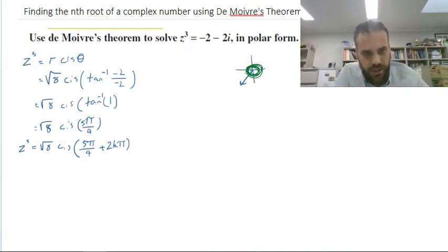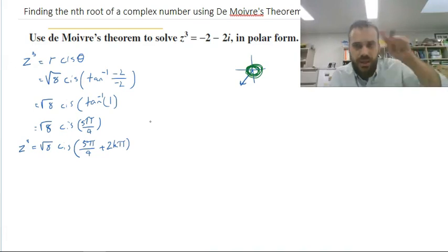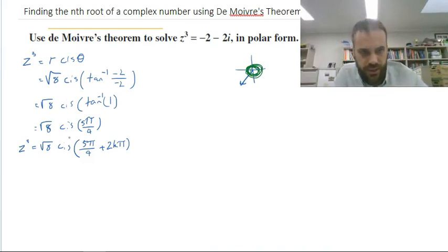So that means that it's going to be root 8, cis, 5 pi on 4, plus 2 times 0 times pi. Or it could also be root 8, cis, 5 pi on 4, plus 2 times 1 times pi. Or root 8, cis, 5 pi on 4, plus 2 times 2 pi. So we can use k0, k1, k2, k3, k4. And each time we do, we create another evolution here. So there's an infinite number of ways, I guess, to write negative 2 minus 2i in polar form.